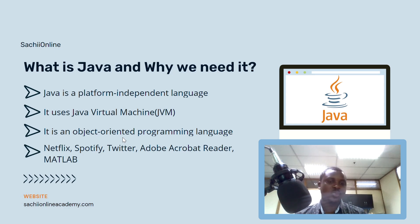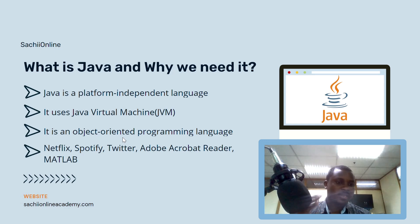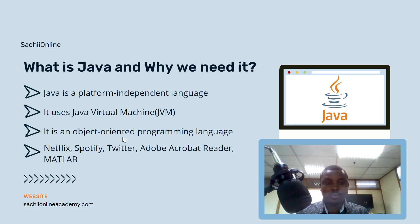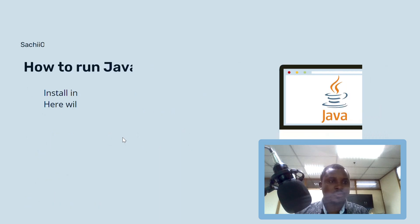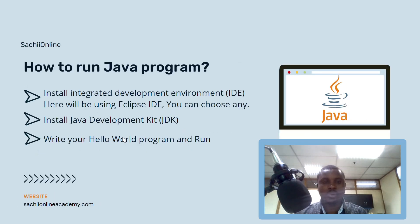Java is an object-oriented programming language and if we look at other websites and applications built using Java, it's actually proof that Java is still the language worth learning. Applications like Netflix, Spotify, Twitter, Adobe Acrobat Reader, and MATLAB were all built using Java. There are a lot more. So in 2023, maybe 2024, Java is still the language to learn.